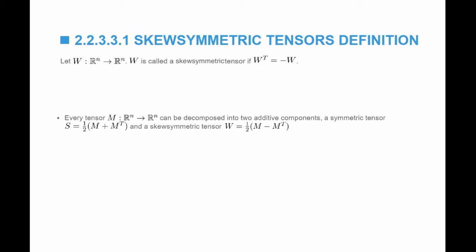Every tensor, every matrix, can be decomposed into two additive components. A symmetric tensor S, which is equal to half the matrix plus its transpose, and a skew-symmetric matrix that's equal to half M minus its transpose.